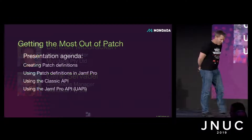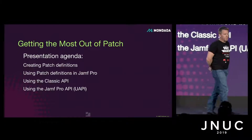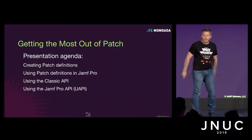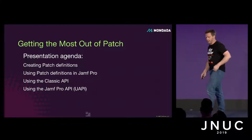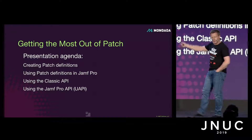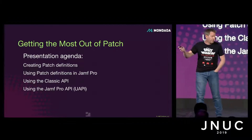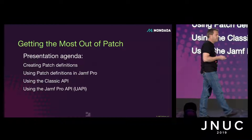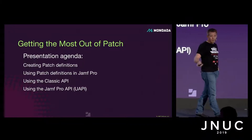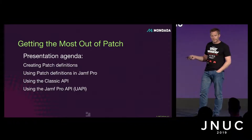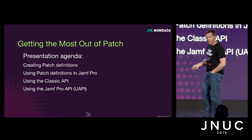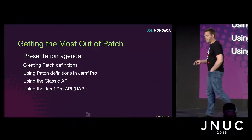The agenda for today: we're going to go through a few things. One is creating patch definitions — there are ways to do this and we're going to show you one or two. Then leveraging those in Jamf Pro — this is all about external sources rather than the internal stuff. And then we're going to touch on things you can do using the API to streamline your workflows. We'll run through everything in the UI and then through the API, same stuff, so you can cross-reference.